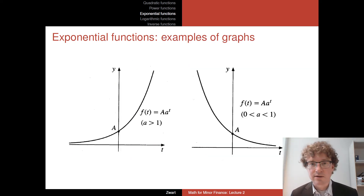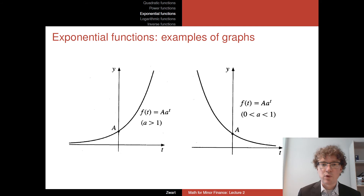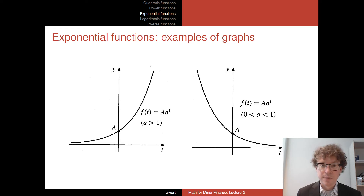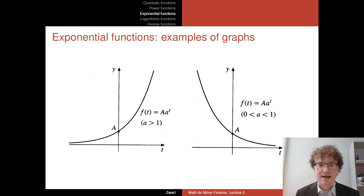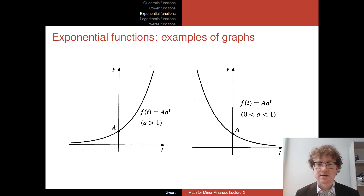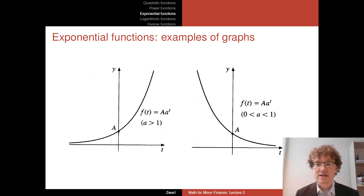What do these exponential functions look like when we draw their graphs? On the left-hand side, when a is greater than one we have exponential growth — the function grows faster and faster as t increases. On the right-hand side, when a is between zero and one we have exponential decline.